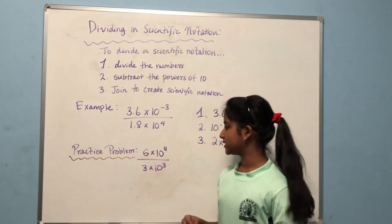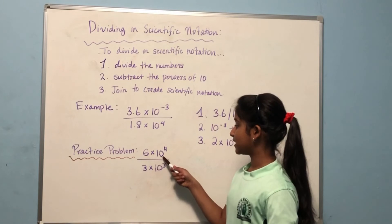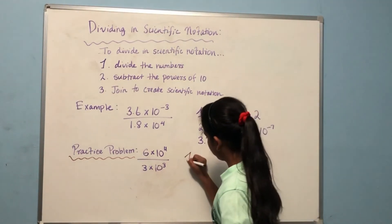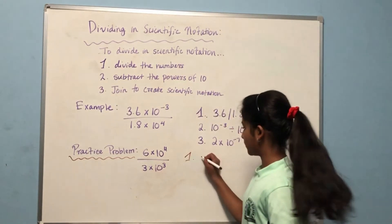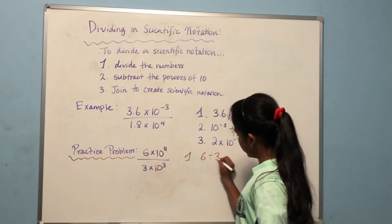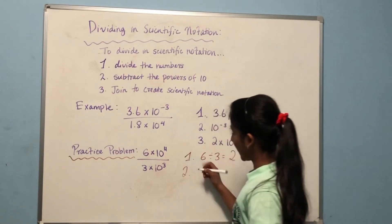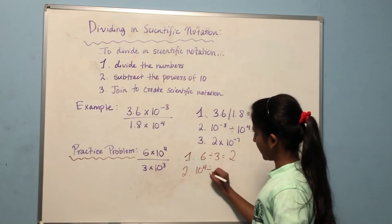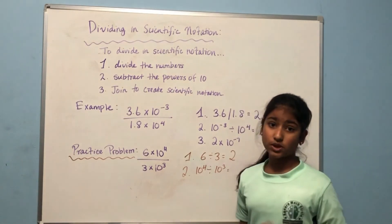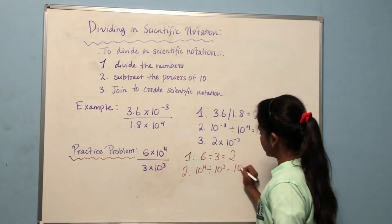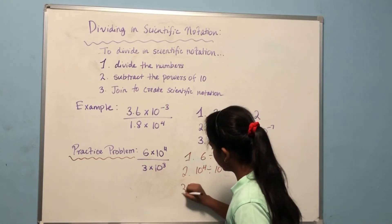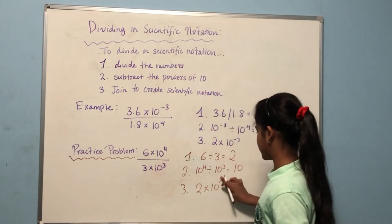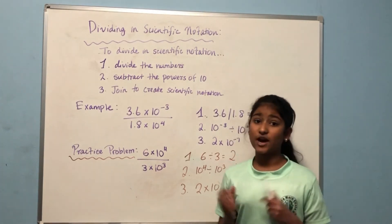Now let's do a practice problem: 6 times ten to the power of 4, divided by 3 times ten to the power of 3. First, divide the numbers: 6 divided by 3 equals 2. Then subtract the powers: 4 minus 3 equals 1, so that's ten to the power of 1, which is just ten. Joining the two gives 2 times ten to the power of 1, or simply 2 times 10.